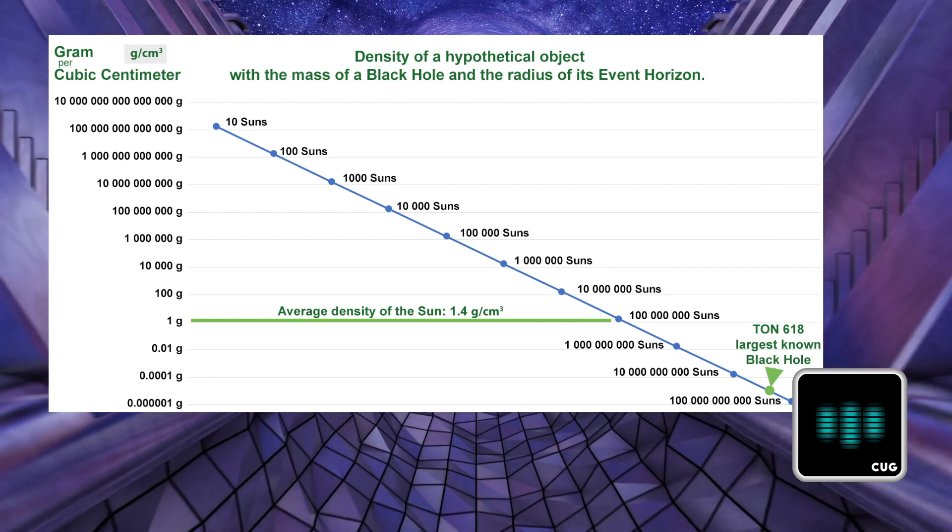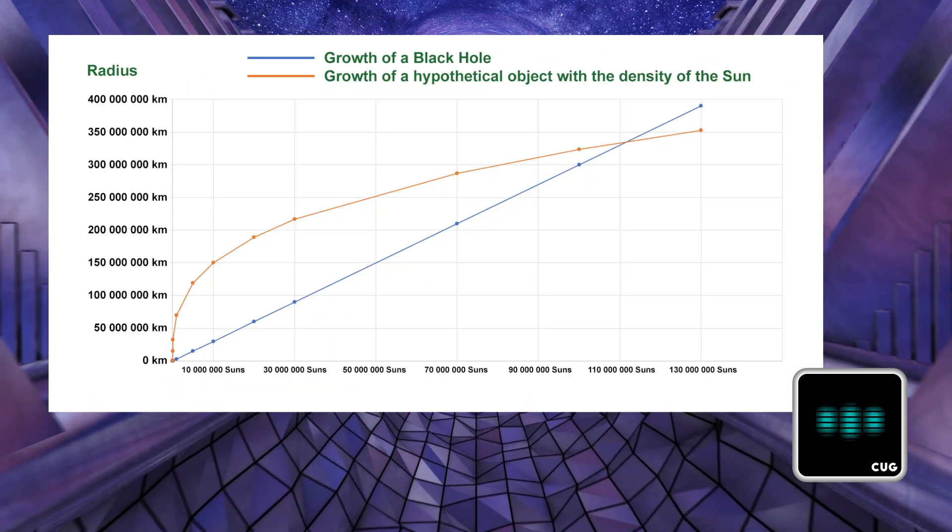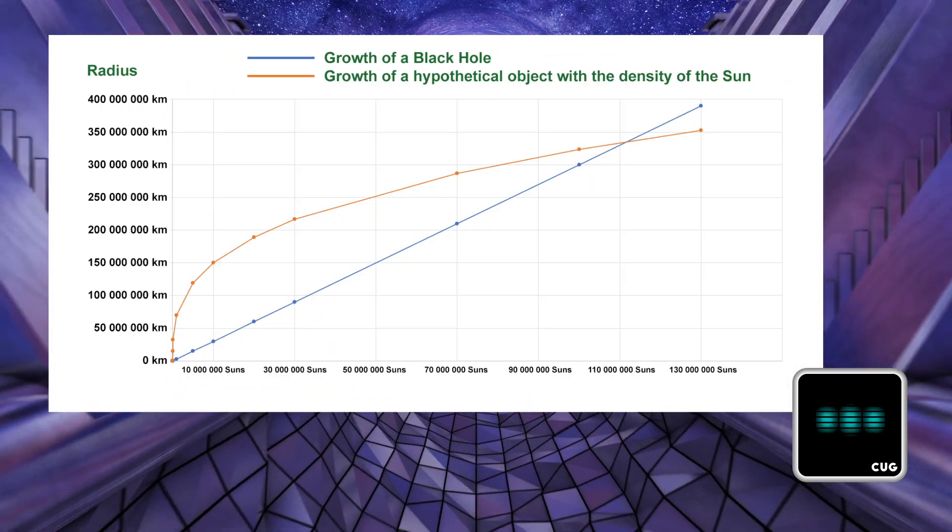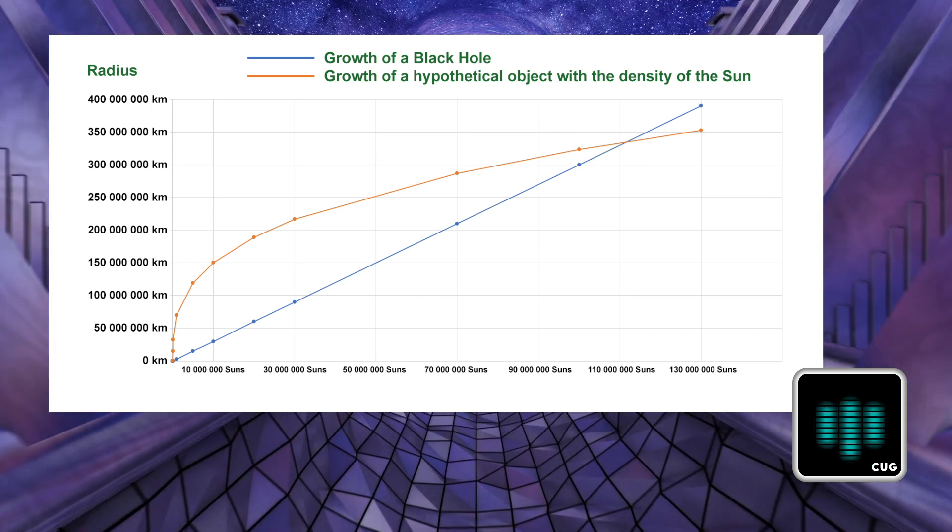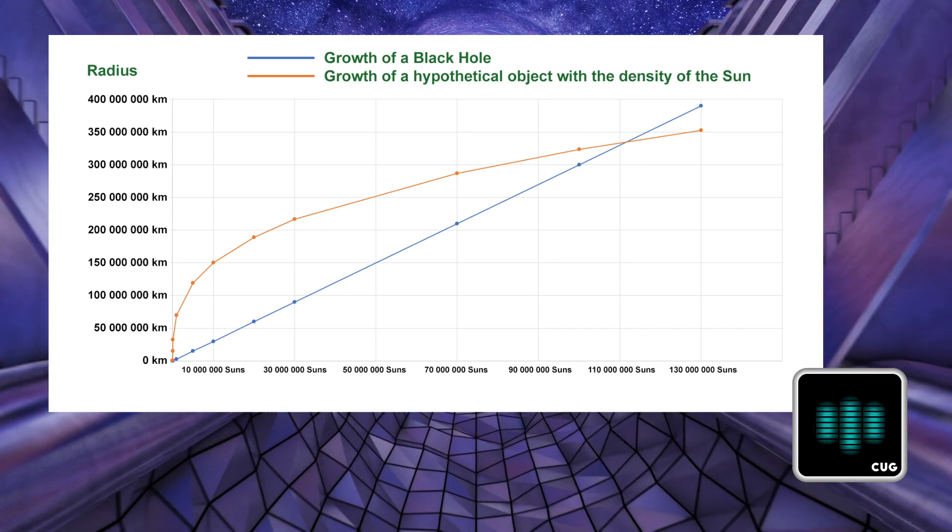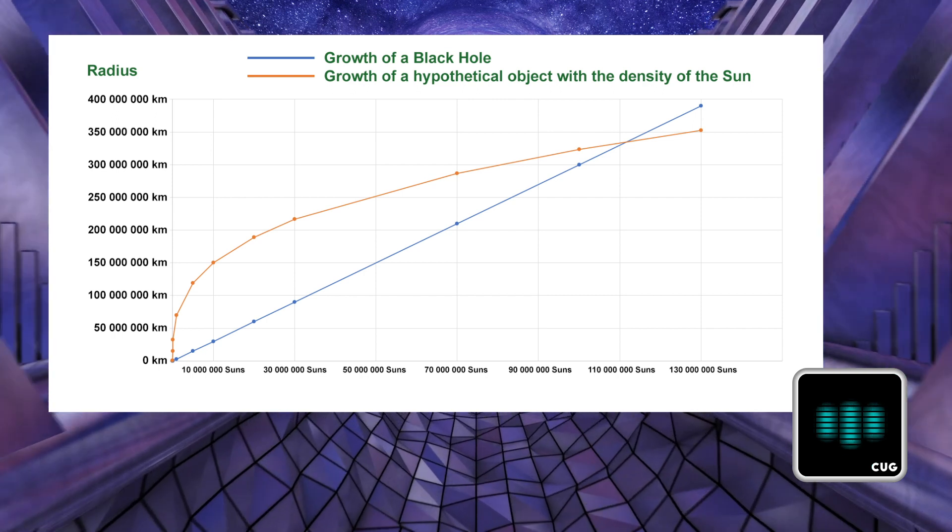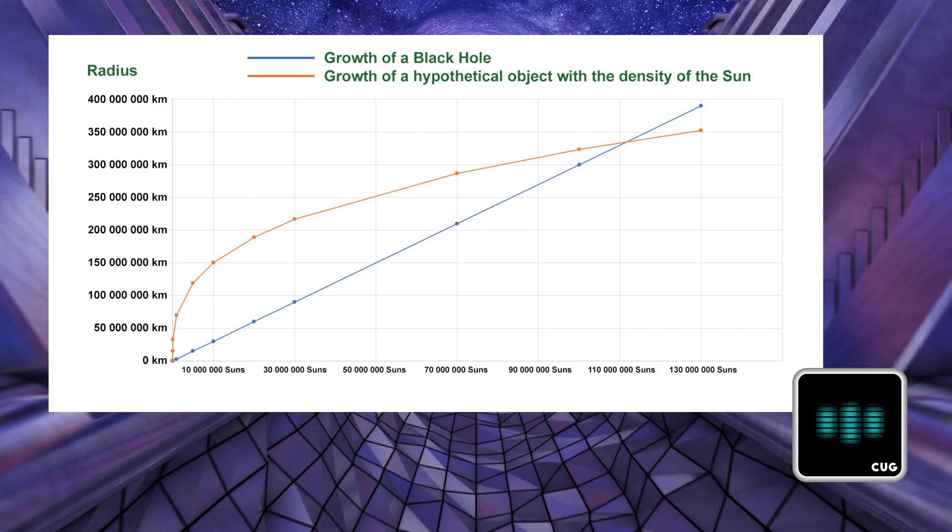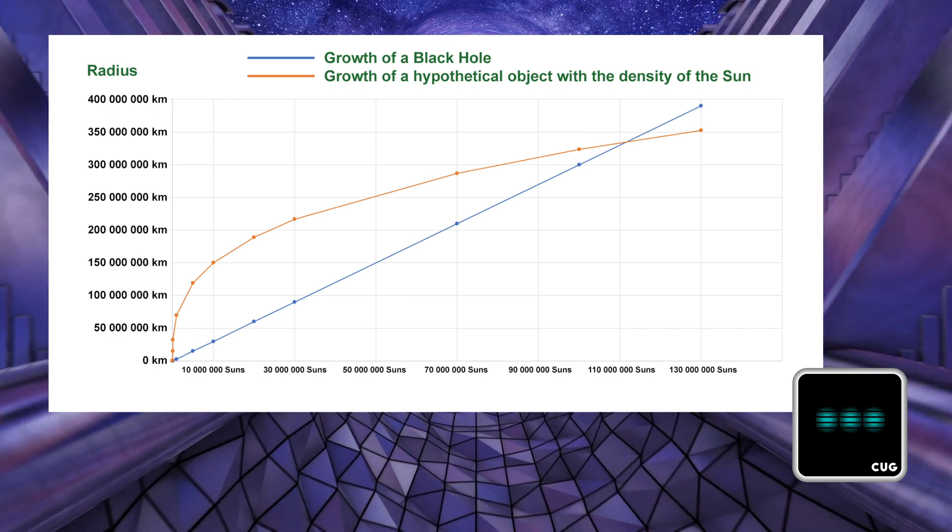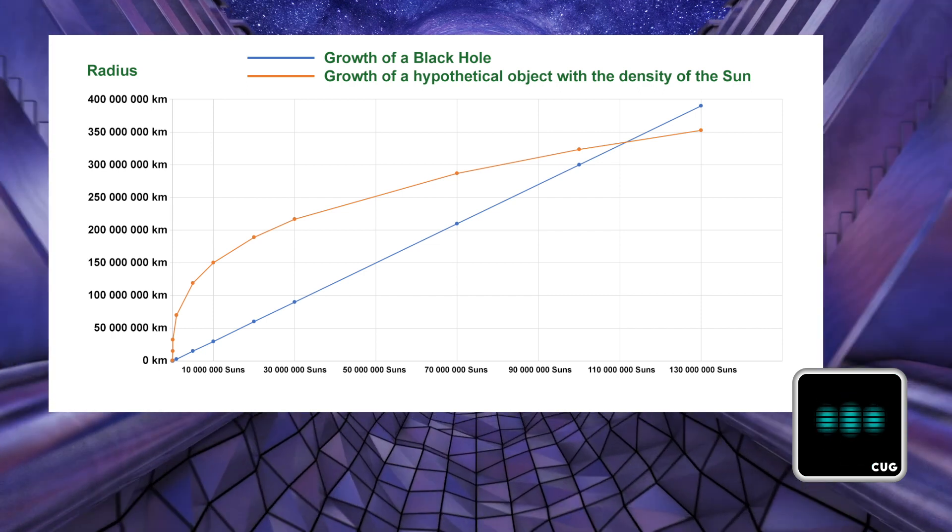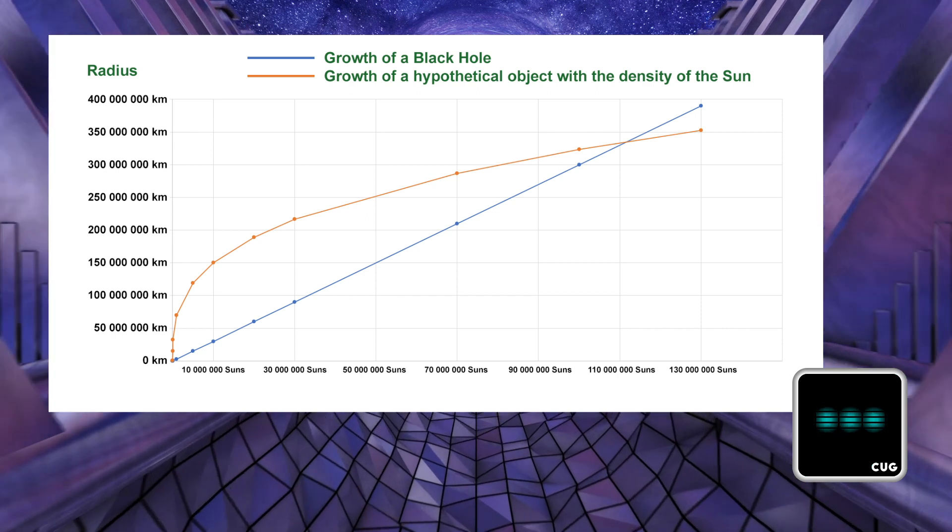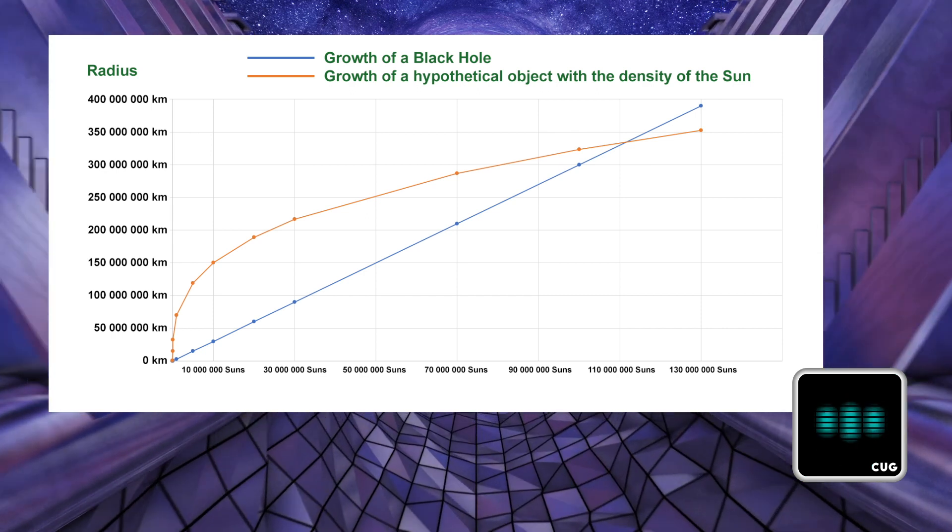Okay that is interesting. Here's another accurate representation of where the overlap happens. The blue line shows how black holes grow. Linear. The orange line how the radius would change if the density of the sun stayed the same. And you just add the volume of the suns. The blue line always has the same slope and carries on increasing to unimaginable sizes. While the orange line keeps flattening out.